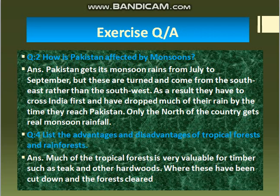As a result, the monsoon winds have to cross India first. By the time they reach Pakistan, they have already dropped much of their rain over India. Therefore, only the north of the country gets real monsoon rainfall. Pakistan's northern mountains receive more rain from these monsoon winds.